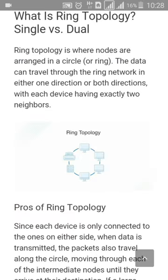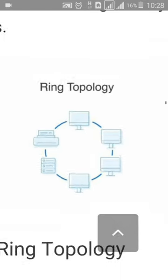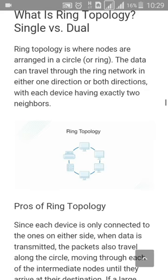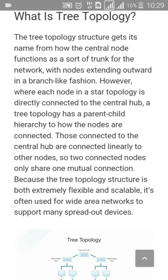Next is ring topology. As you can see in the diagram, ring topology is where nodes are arranged in a circle — like a ring. Data can travel through a ring network in either one direction or both directions, meaning clockwise or anti-clockwise, with each device having exactly two neighbors.